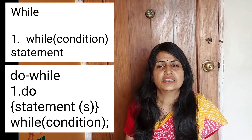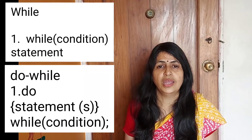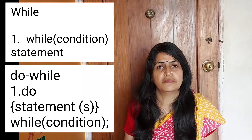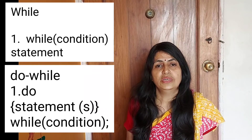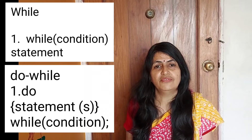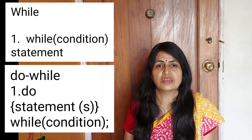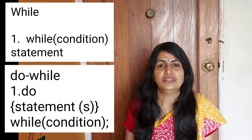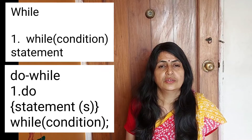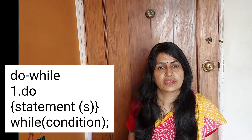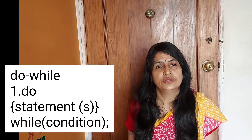In while loop, we use the condition at first — that means: while condition, then statement. And in do while loop, we use the statement first and then the condition — that means: do statement, while condition. So we give the condition at the top in while loop and we keep the condition at the bottom in do while loop. This is the first difference.